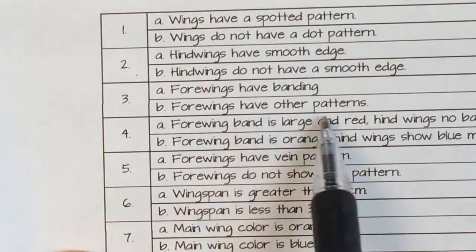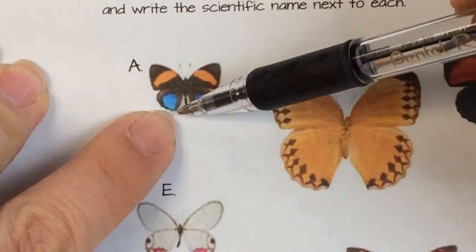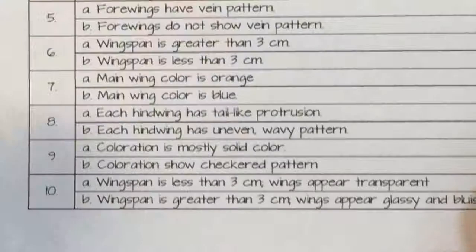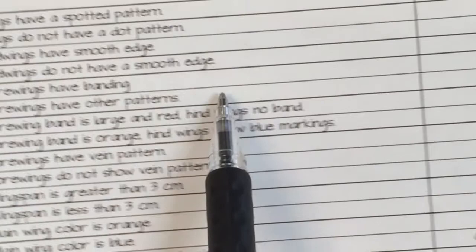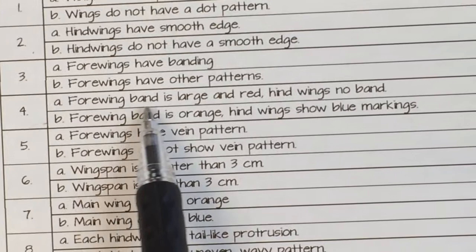So in three it says: fore wings have a banding, or fore wings have other patterns. If you don't know, fore wings are the wings that are on top. These are your hind wings; these are your fore wings. And so you see here we have a nice band going across. So for part three, the fore wings have banding. Now if we trace that over to the right, it tells us to go to part four.